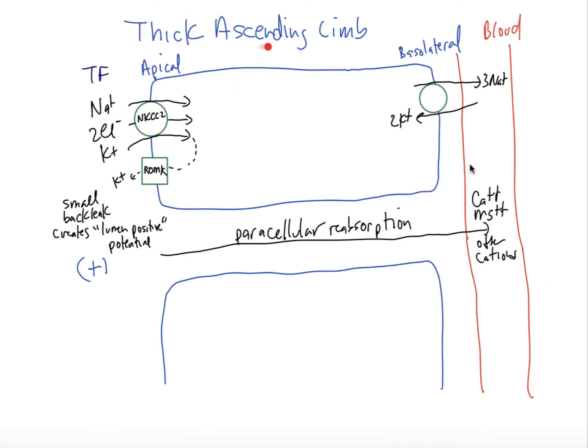So now we're going to talk about the thick ascending limb which is the final portion of the loop of Henle. We didn't spend time talking about the thin descending limb which just reabsorbs water passively and the thin ascending limb which is only really seen in the long loop juxtamedullary nephrons which reabsorbs passively sodium and chloride as well. So we look at the polarized cell here and we have the apical membrane on this side, the basolateral on that side.